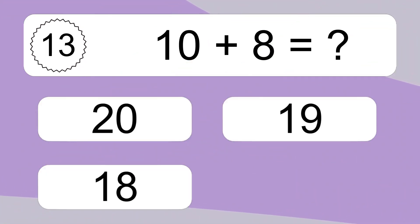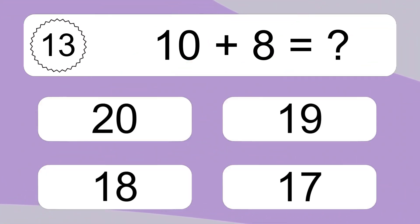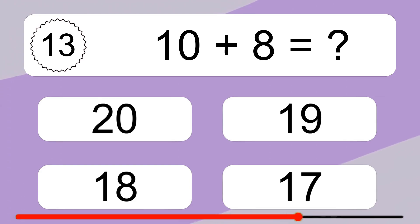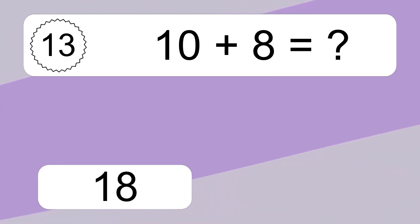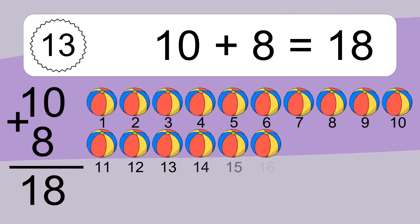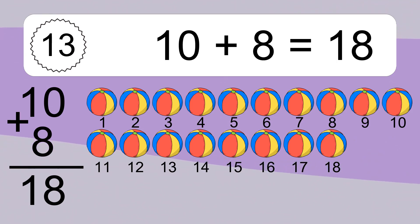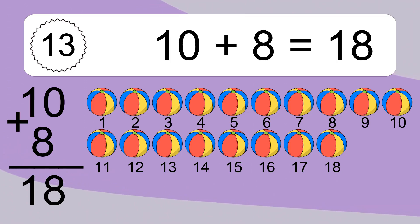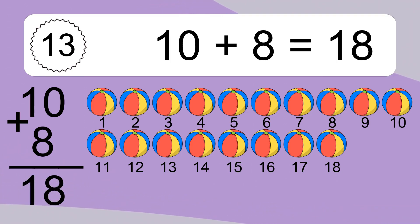Ten plus eight equals what? Let's count it: one, two, three, four, five, six, seven, eight, nine, ten, eleven, twelve, thirteen, fourteen, fifteen, sixteen, seventeen, eighteen.